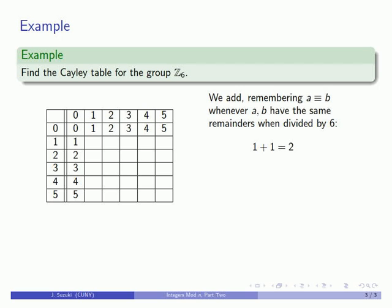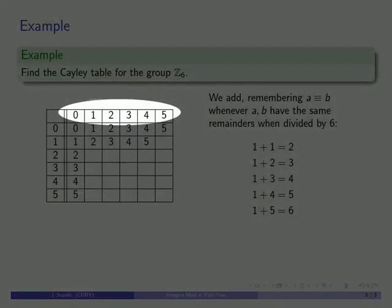So 1 plus 1 is 2, 1 plus 2 is 3, 1 plus 3 is 4, 1 plus 4 is 5, 1 plus 5 is 6.